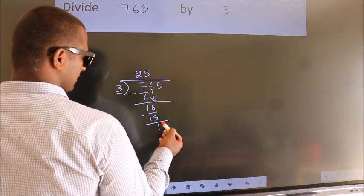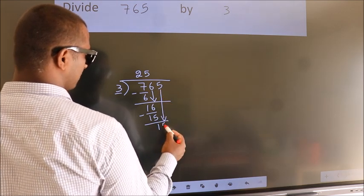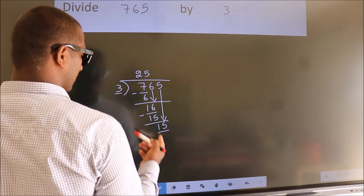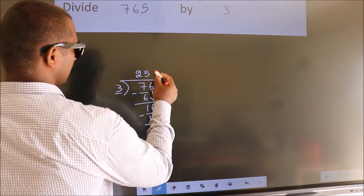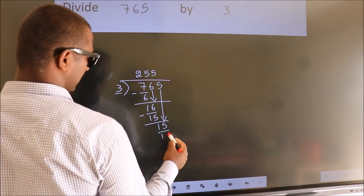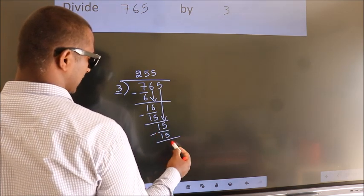After this, bring down the beside number. So 5 down, making 15. When do we get 15 in the 3 table? 3 fives equals 15. Now we subtract. We get 0.